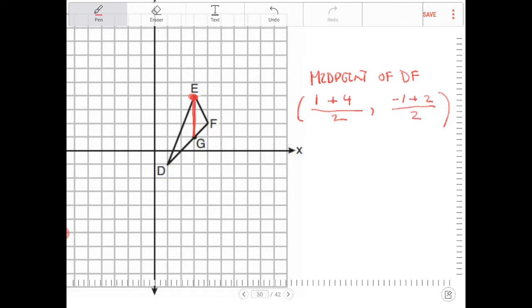So the median, or the midpoint, is going to be 5 halves, or 2.5, comma 1 half, or 0.5.